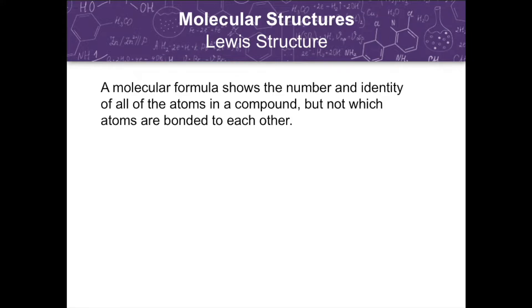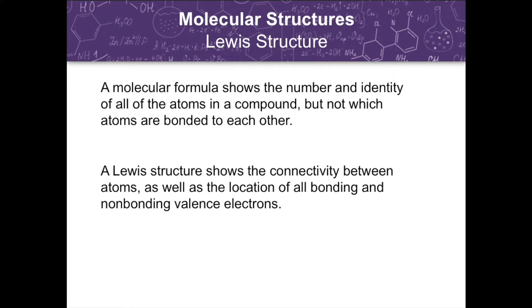We have discussed previously in general chemistry the different types of formulas. One of those is the molecular formula, which shows us the number and identity of all the atoms in a compound. However, it does not show which atoms are bonded to each other. That's why we use Lewis structures to illustrate the connectivity between atoms, as well as the location of all bonding and non-bonding valence electrons.